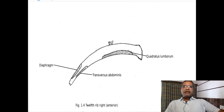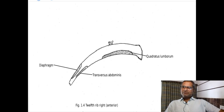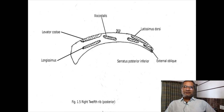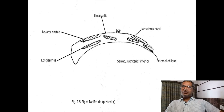The 12th rib shows anterior surface, posterior surface, upper border, and lower border. The anterior surface shows attachment of quadratus lumborum medially, and laterally there is attachment of the diaphragm and transversus abdominis muscle. The upper and lower margins show attachment of the thoracolumbar fascia. The posterior surface shows attachment of levator costae, longissimus thoracis, and iliocostalis from medial to lateral, and the lateral part shows attachment of latissimus dorsi, serratus posterior inferior, and external oblique muscle of the abdomen.